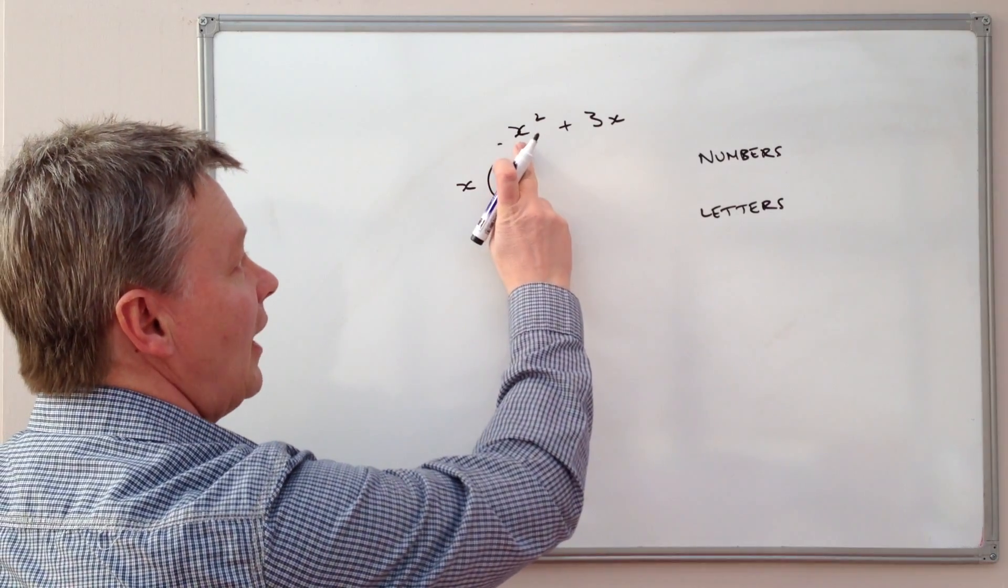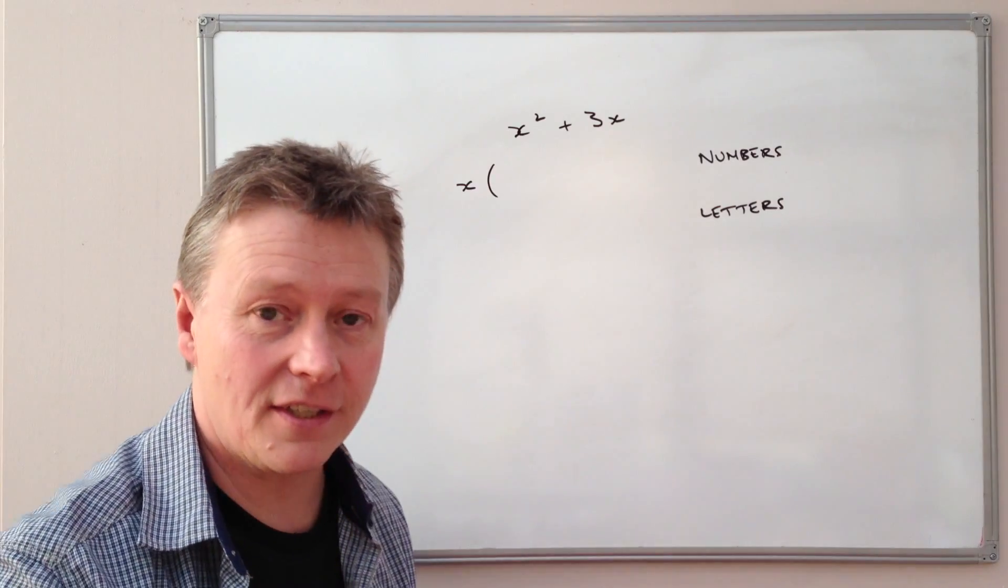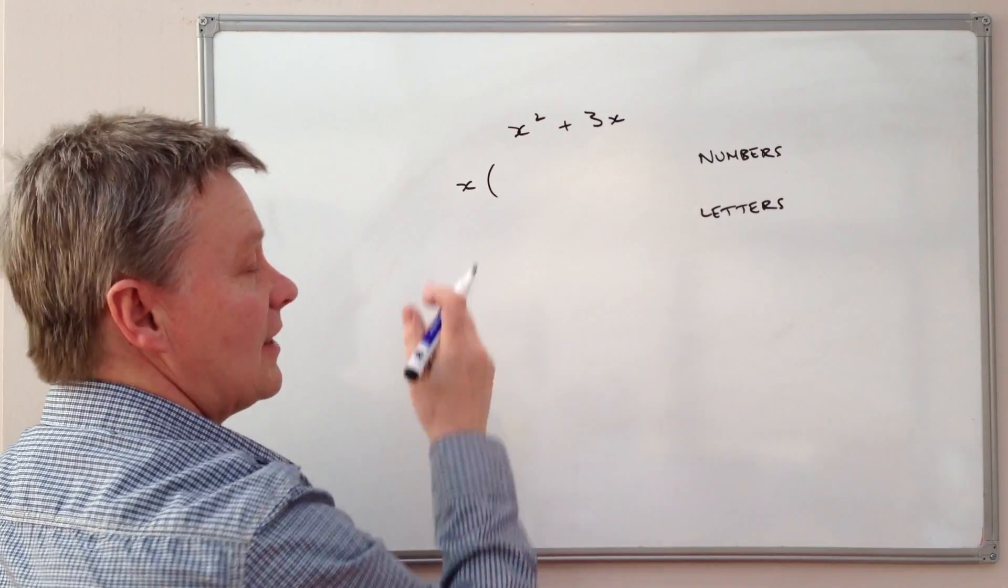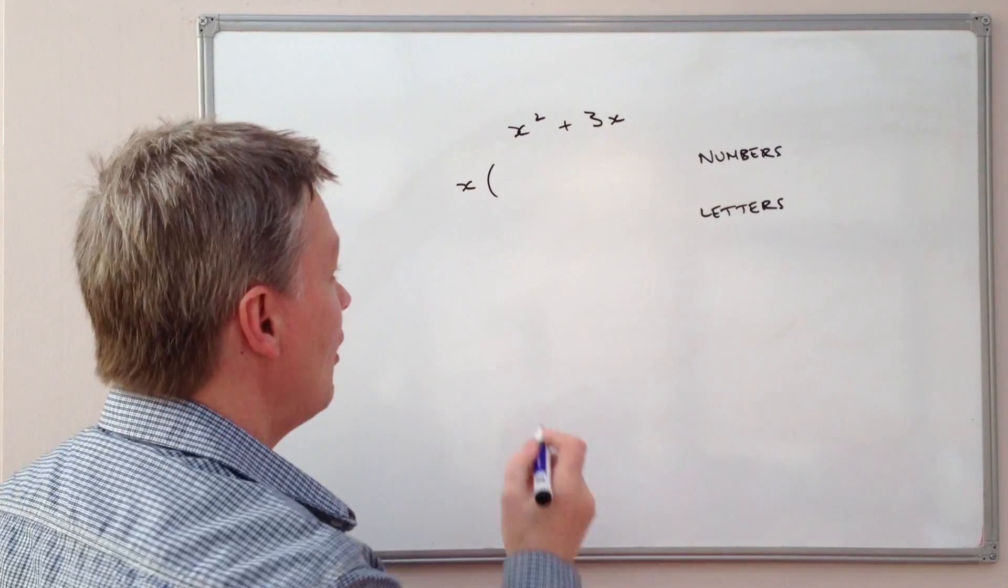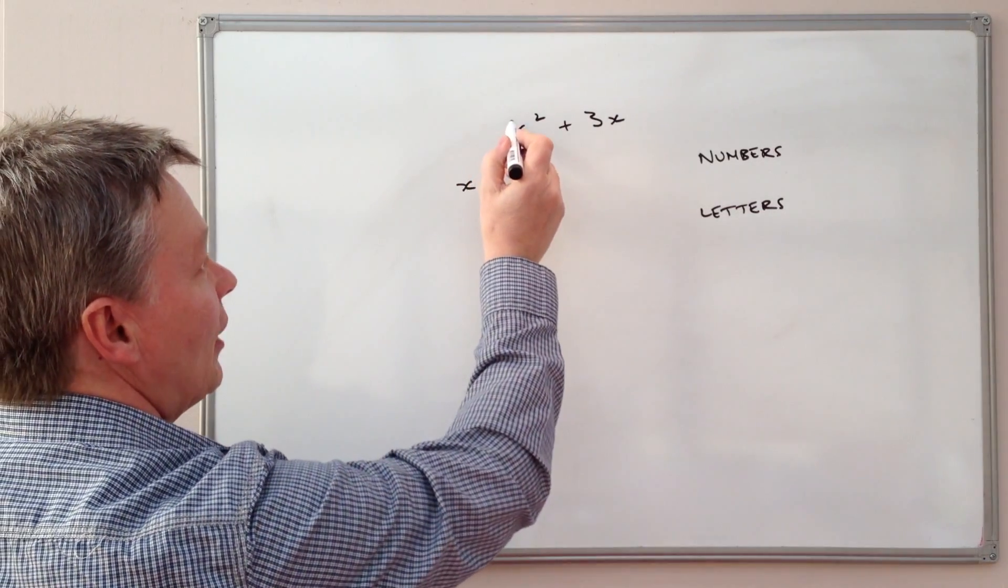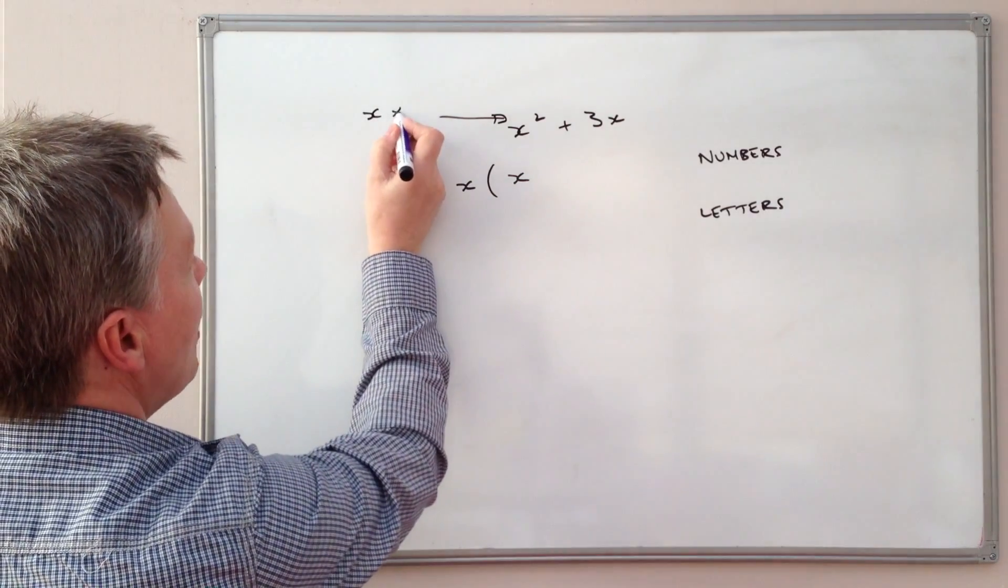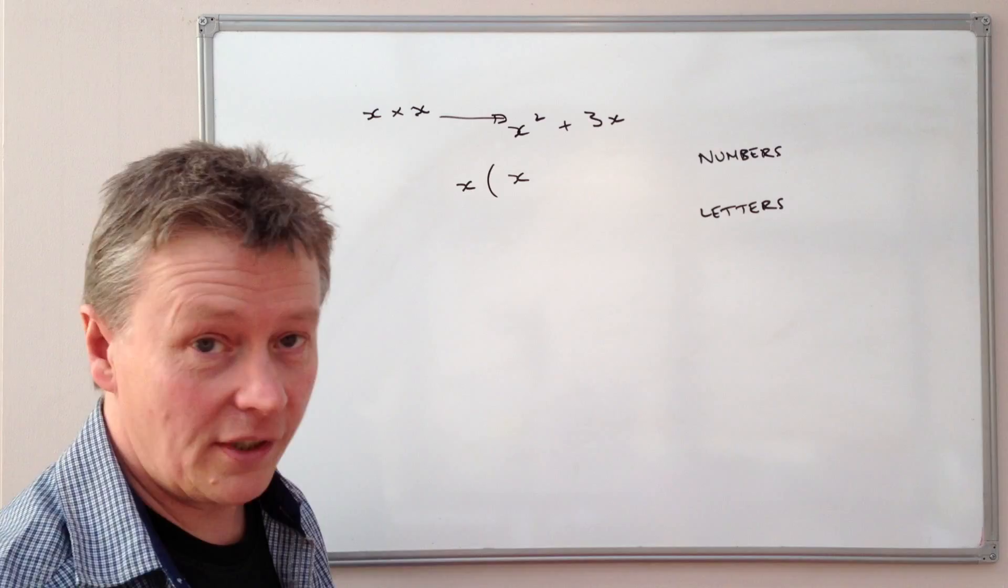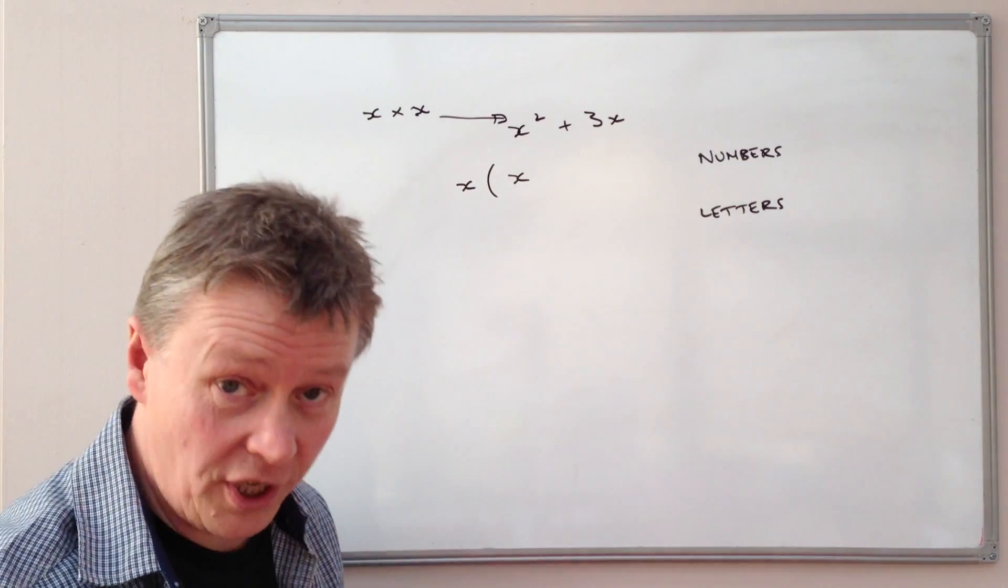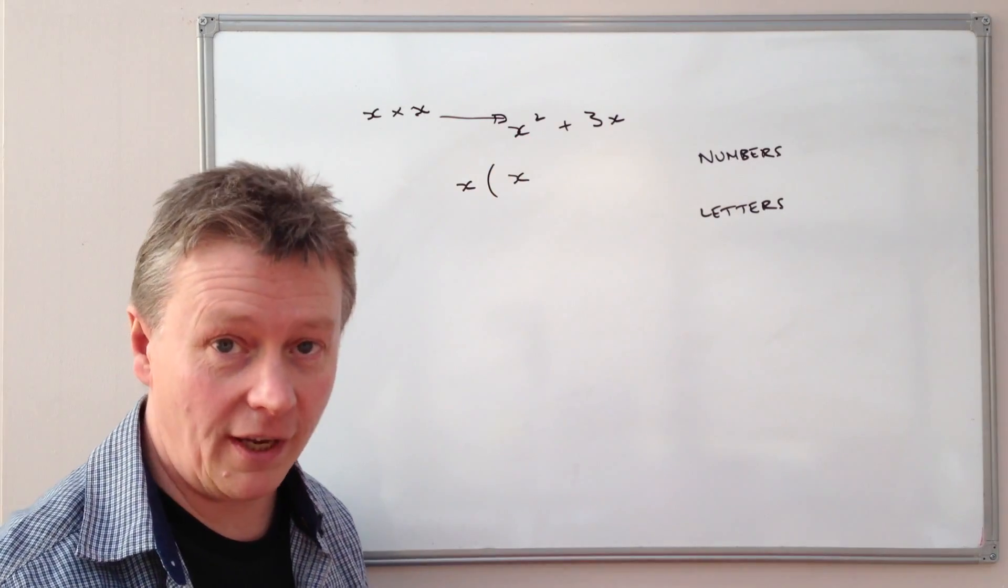So the first thing we do is we look at x squared, and we say, what have I got to do to x in order to make x squared? Well, x squared is x times x. So I'm going to put an x in the bracket there. So I just want to clarify that a little bit. So if we look at this x squared, what x squared means is x times x. So what we're going to do here is take x out, and then when we check it in the future, we're going to multiply it by x again. And that will give us this expression, x squared.